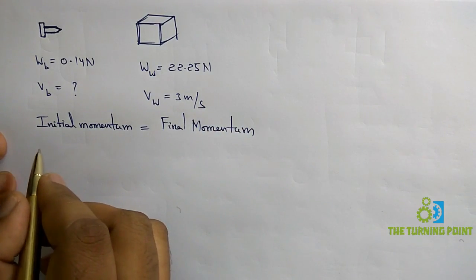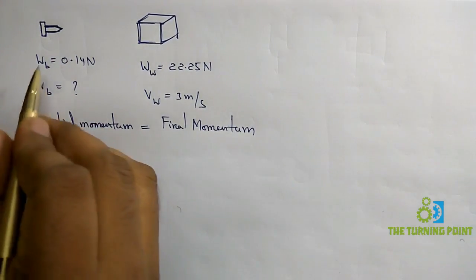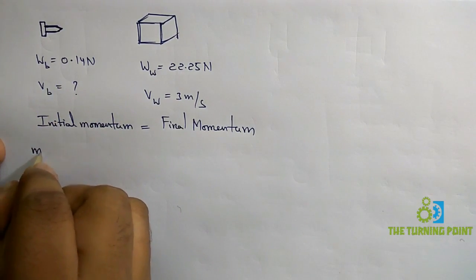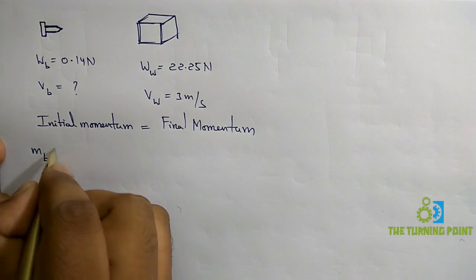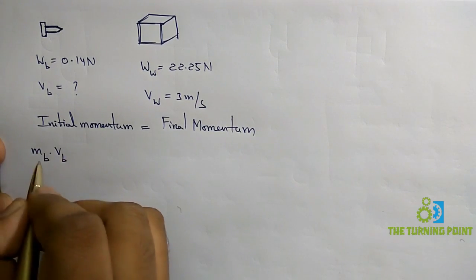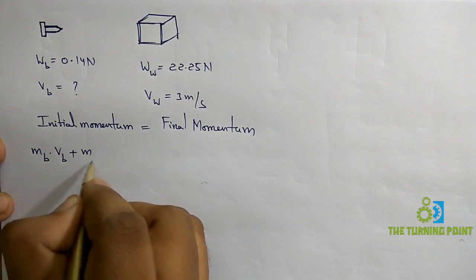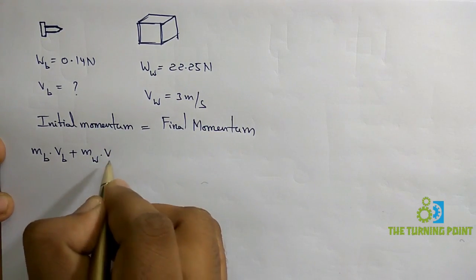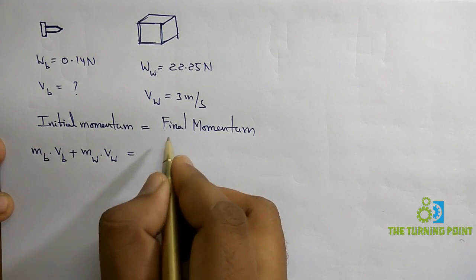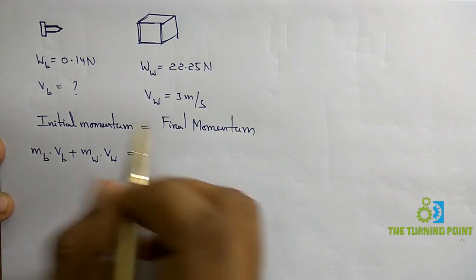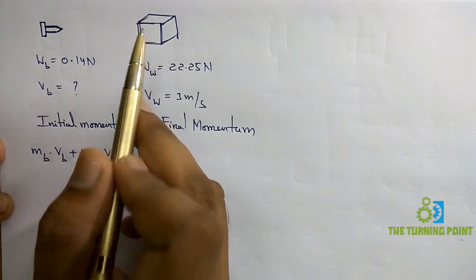When considering initial momentum, there are two objects. The momentum of the bullet is mass of bullet into velocity of bullet. The initial momentum of the block is mass of block into velocity of block. For final momentum, when the bullet is fired it hits the wooden block and stays inside it, so both masses are combined together.